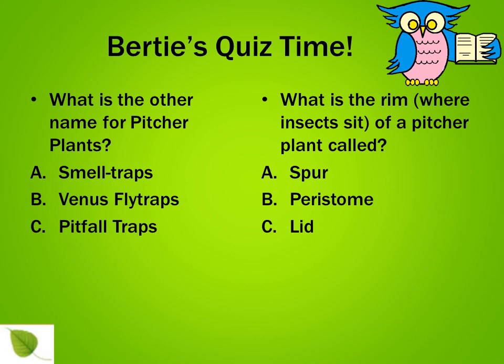It's quiz time! What is the other name for pitcher plants? A: smell traps. B: Venus fly traps. C: pitfall traps. What is the rim where insects sit on a pitcher plant called? A: spur. B: peristome. C: lid.